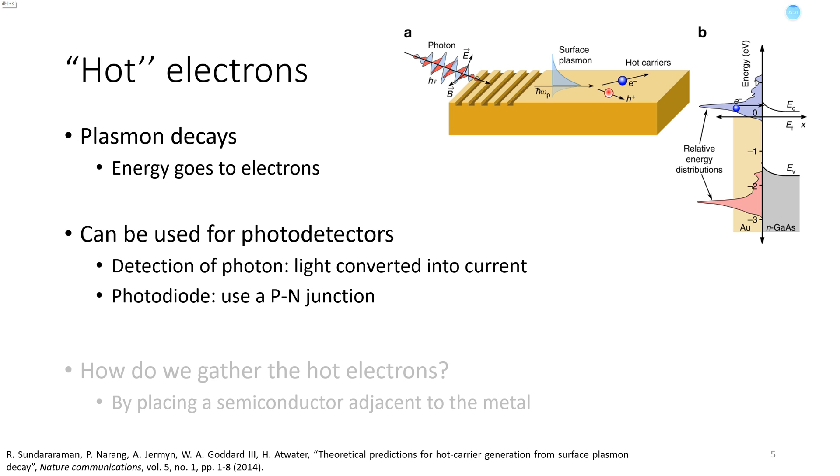When we want to detect some incident photons, a typical way to do this is to convert light into current, so that we can measure the current. For example, a very simple photodiode can be constructed using a P-N junction.